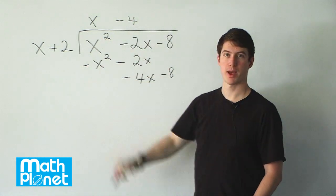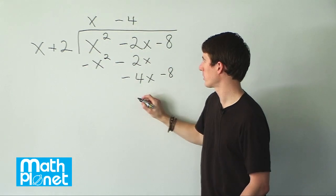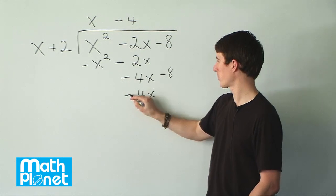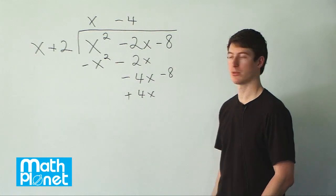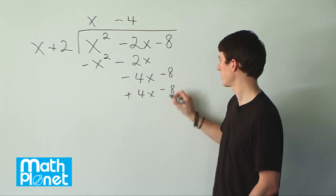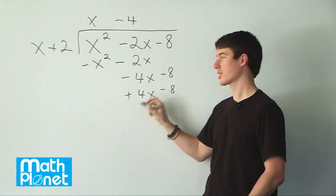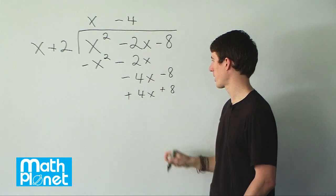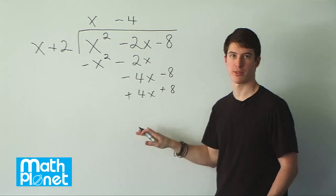If we multiply this back through, we get negative 4 times x, and we're subtracting it so it's plus. And then negative 4 times 2 which is negative 8, but it's subtraction so it's plus. Then we have negative 4x plus 4x, negative 8 plus 8. Of course, everything's gone now.